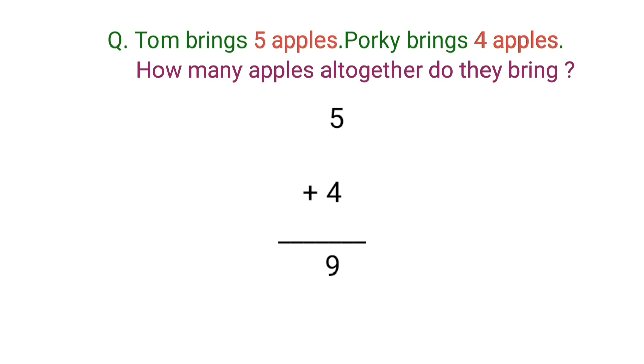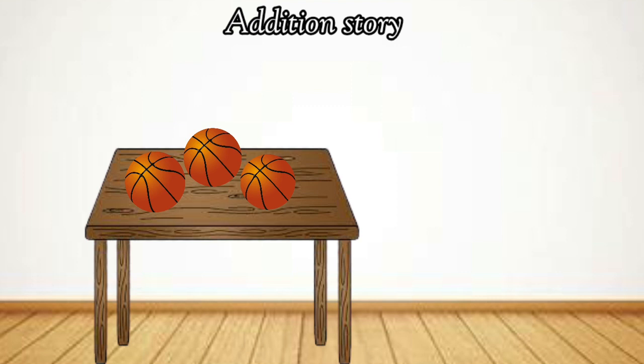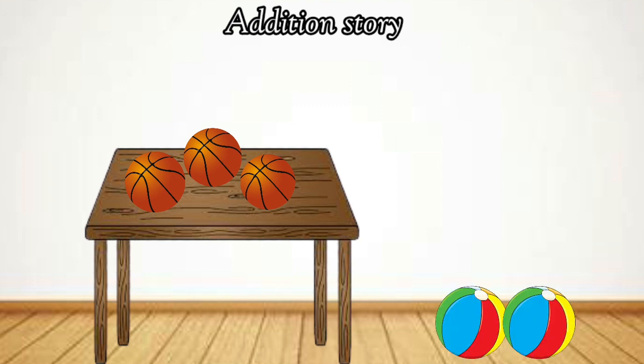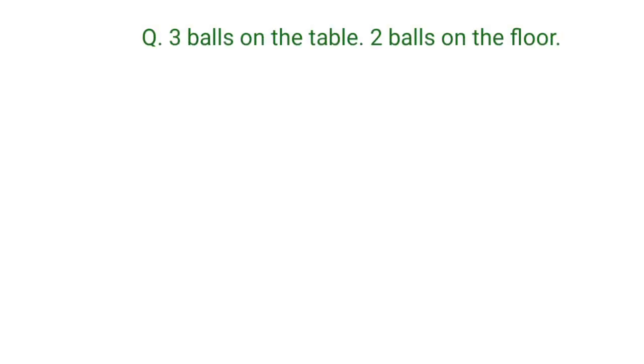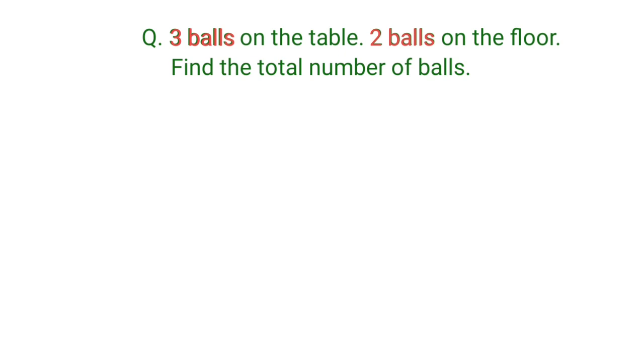Now let us look at a different addition story and solve it. There are three poles on the table and two poles on the floor. Find the total number of poles. We have to see what information we have: three poles on the table and two poles on the floor. And what we have to find out: the total number of poles.